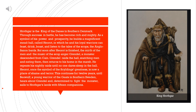Hrothgar is the king of the Danes in southern Denmark. Through success in battle, he has become rich and mighty. As a symbol of his power and prosperity, he builds a magnificent mid-hall called Heroth, in which he and his loyal warriors can feast, drink, boast, and listen to the tales of the Shopes, the Anglo-Saxon bards. But soon after Heroth is finished, the mirth of the men and the music of the Shope anger Grendel, a monster descended from Cain. Grendel raids the hall, snatching men and eating them, then returns to his home in the marsh.